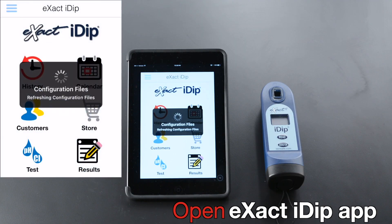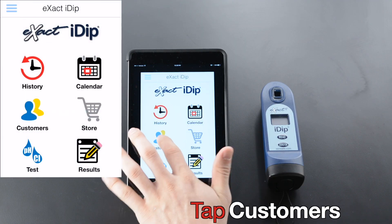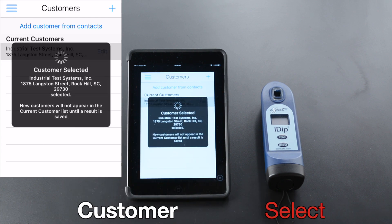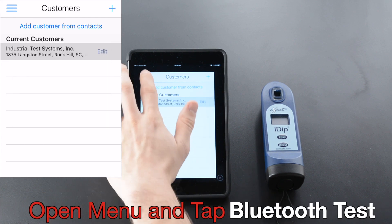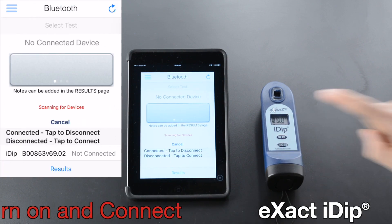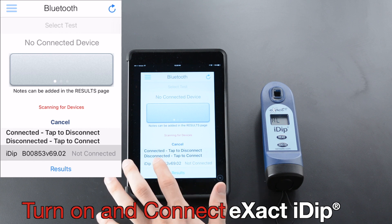Open the Xact iDip app. Tap Customers, select a customer, open the menu, and tap Bluetooth Test. Turn on and connect the Xact iDip device.